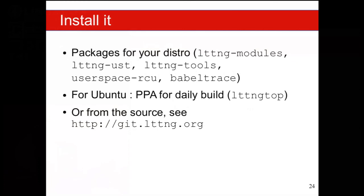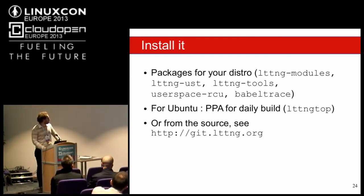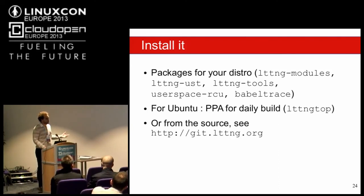For installation, packages are available for most distros. For Ubuntu we also have a daily-build PPA with LTTng Top — it's not in the default packages but the PPA has it, or you can build from source. The LTTng 2.4 release with all these features is expected for mid-November.